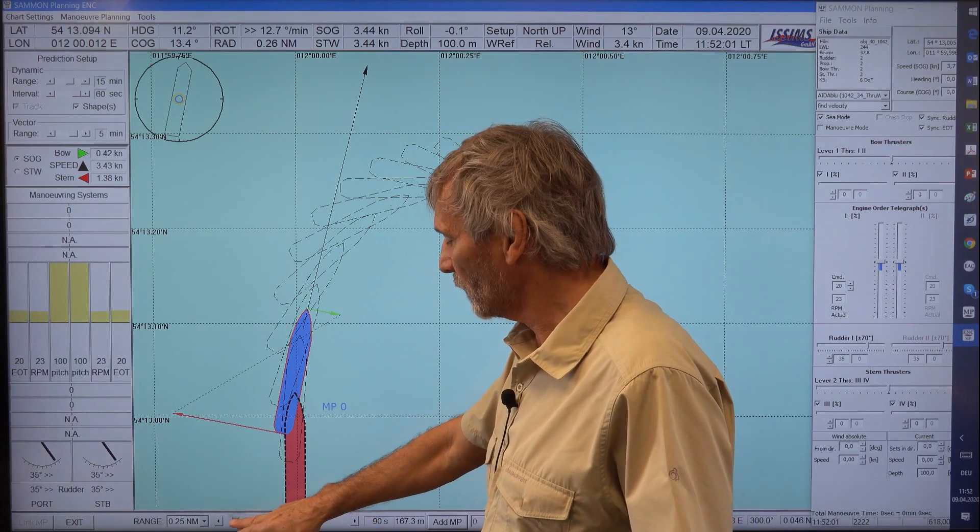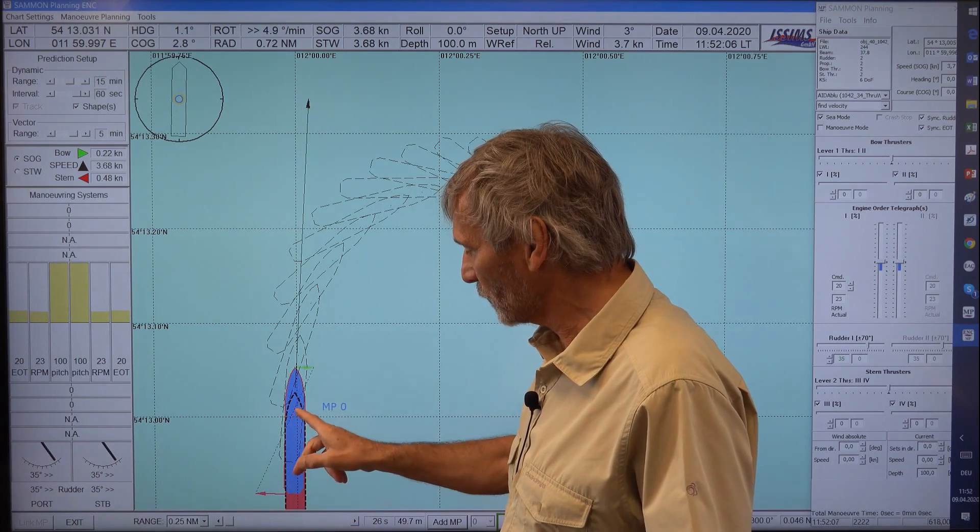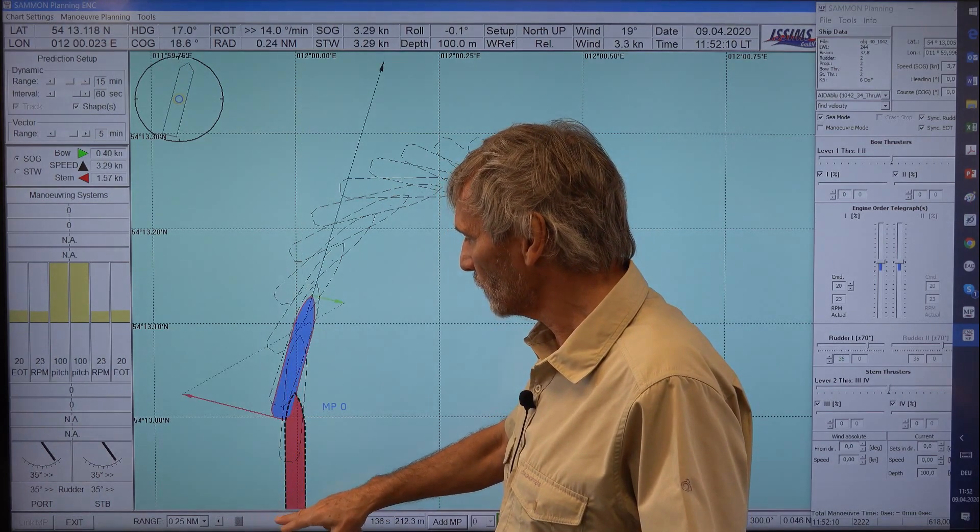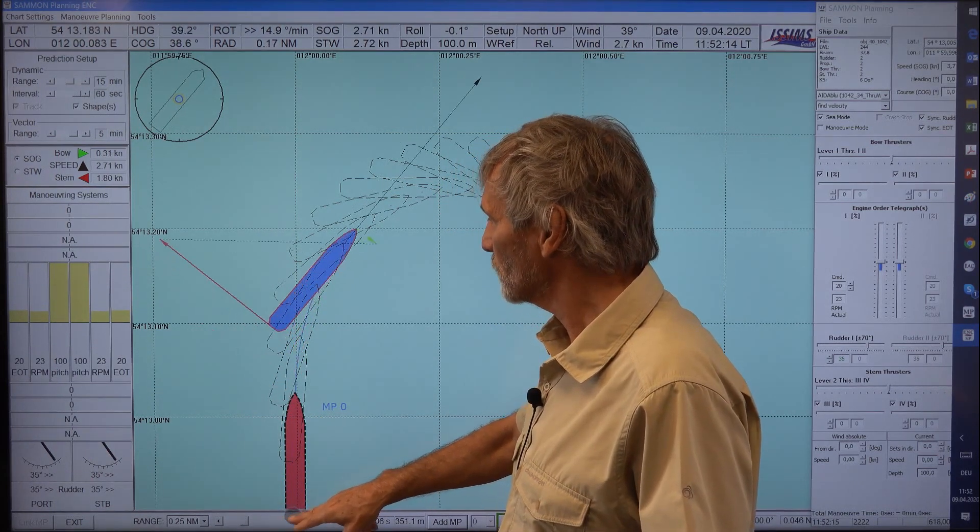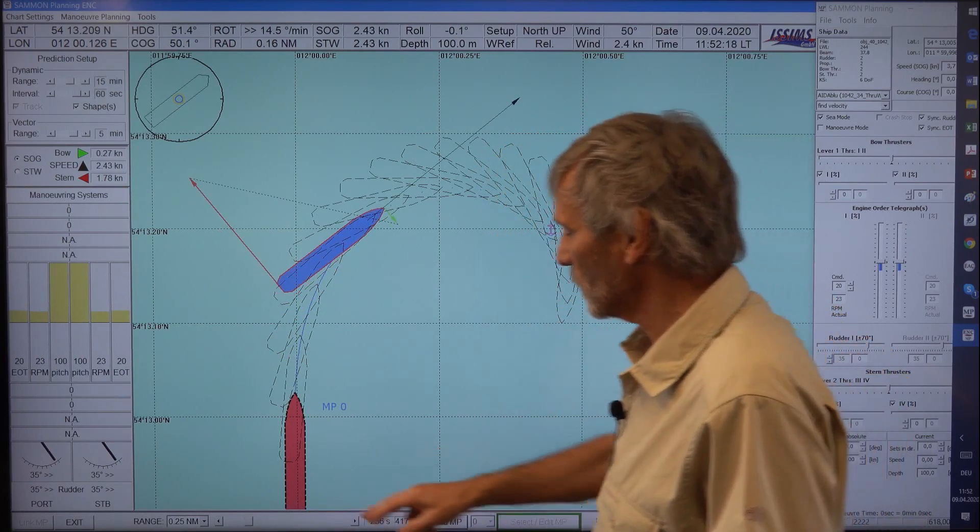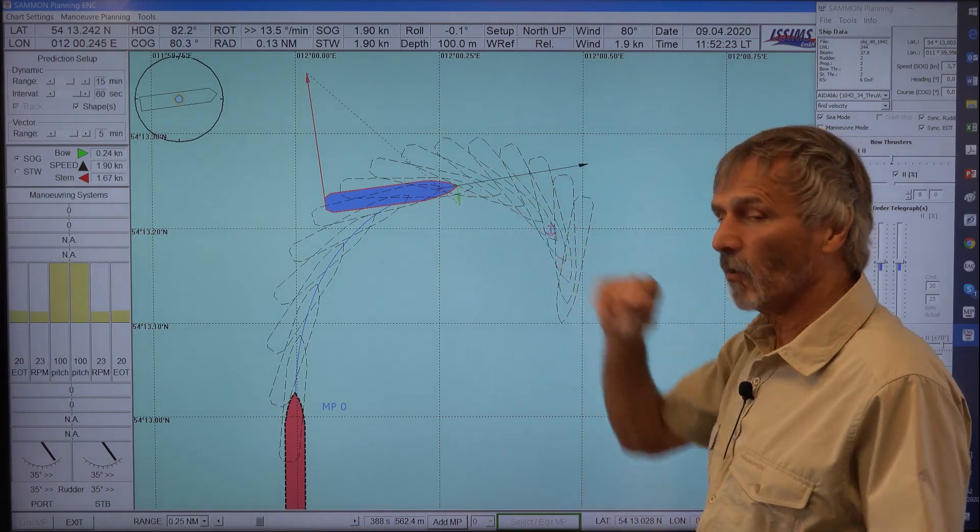And you see when the pivot point is in the beginning, when we start the maneuver, then the pivot point is more to the center. And if the ship proceeds forward, then finally the pivot point is located, maybe a little bit faster, is located at the bow.